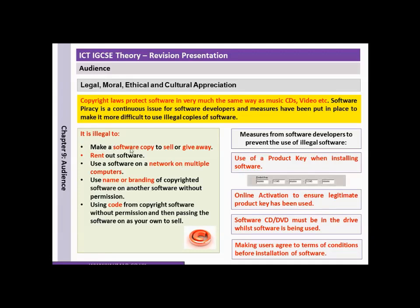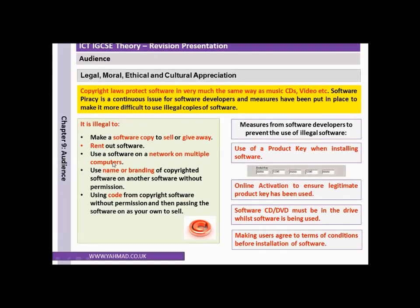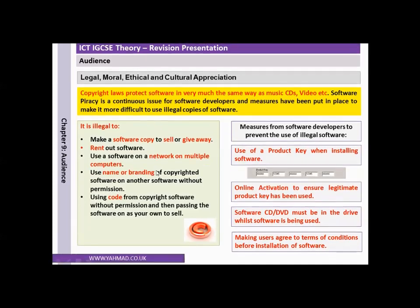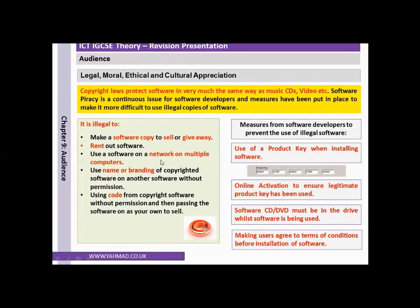It is illegal to make a software copy, to sell or give away, to rent out software, to use the software on a network on multiple computers, to use the name or branding of copyright software on another software without permission, and to use code from copyright software without permission and pass it off as your own to sell. Obviously we can't sell, give away, or rent software, and we shouldn't be installing one licence across a full network or using aspects of the code or branding to create our own software.